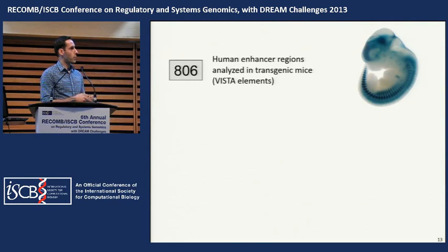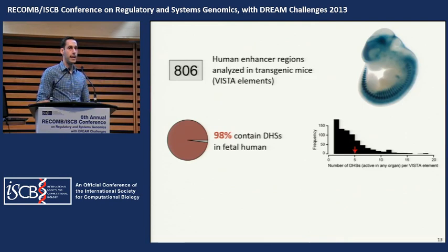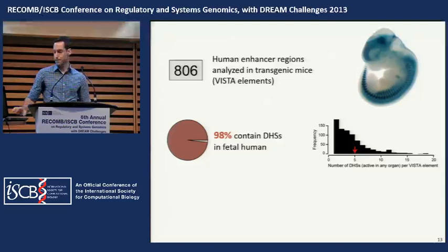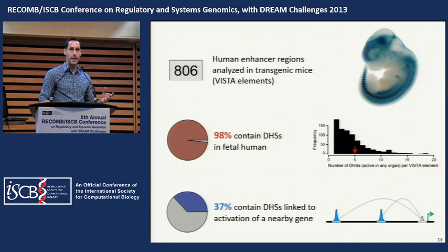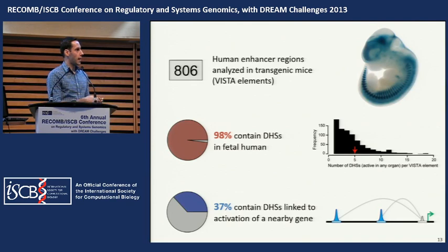Remarkably, nearly all of these 806 VISTA elements are DNase 1 hypersensitive or contain DHSs in the human fetal data, with an average of about five DHSs per element ranging from one up to nearly 20. We also produced a genome-wide map of enhancer-promoter connections using our DNase 1 data across organs, and 37% of DHSs linked to activation of a particular gene coincide with these VISTA elements, providing a hypothesis for which gene each enhancer element controls.